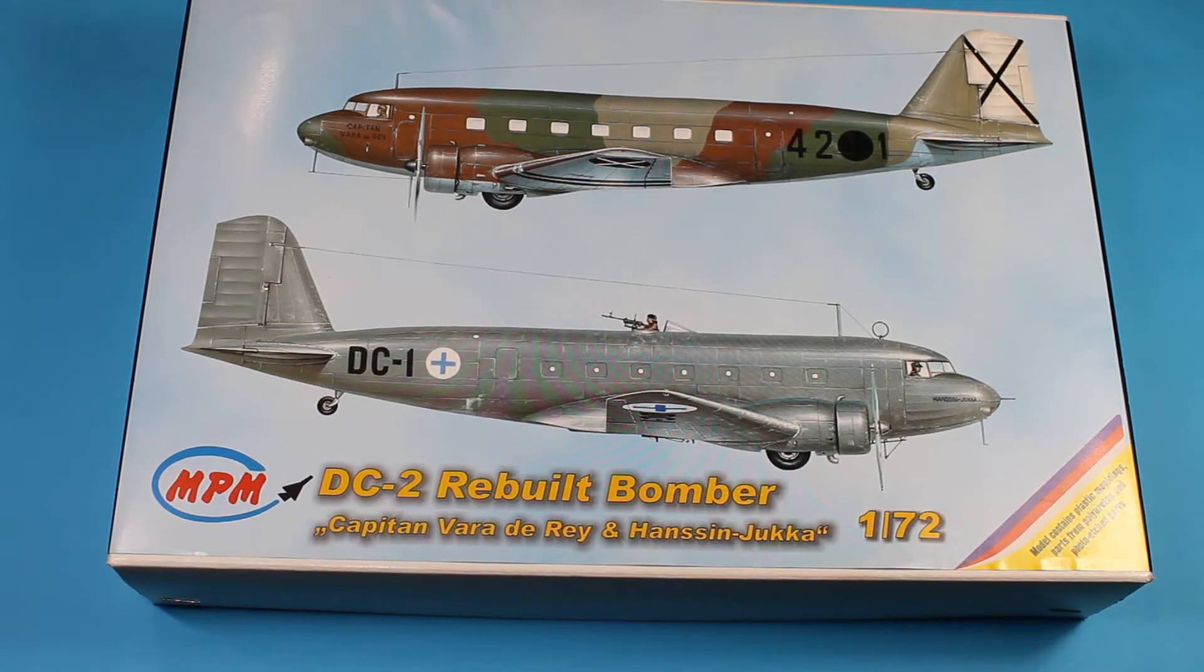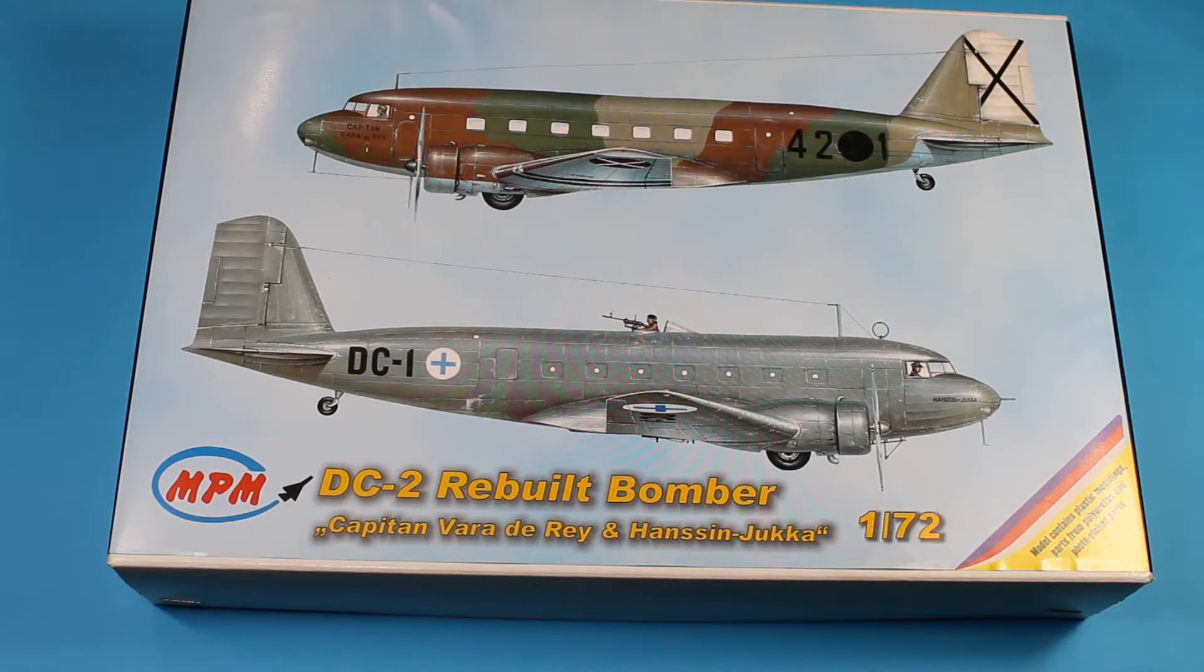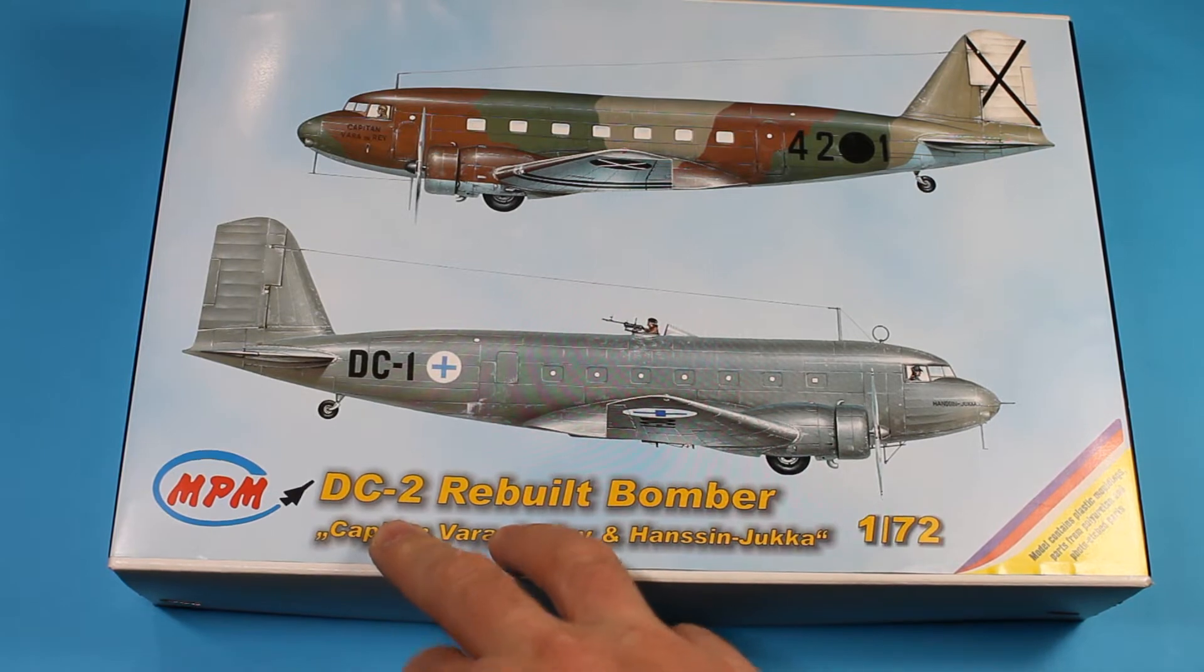Next up on the weird kit review, we've got the MPM DC-2 Rebuilt Bomber in 1/72nd scale. This is the Douglas Dakota, but the DC-2 version.